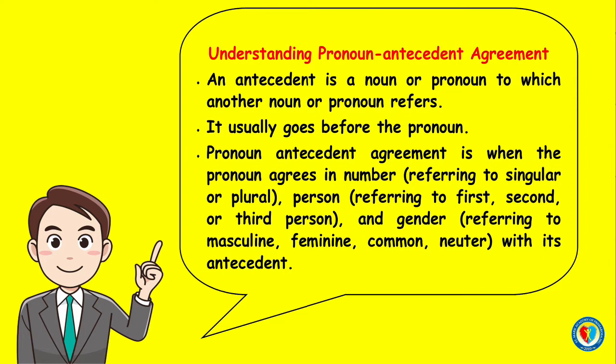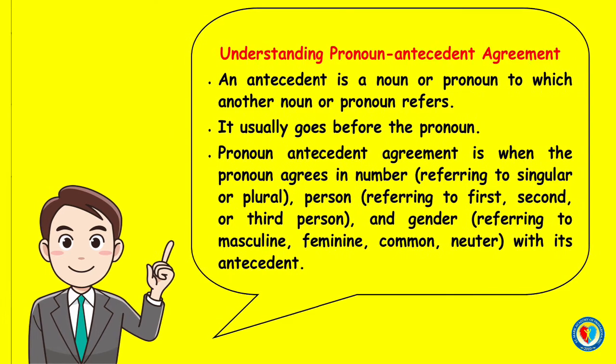Pronoun antecedent agreement is when the pronoun agrees in number — referring to singular or plural — person, referring to first, second, or third person, and gender, referring to masculine, feminine, common, or neuter with its antecedent.